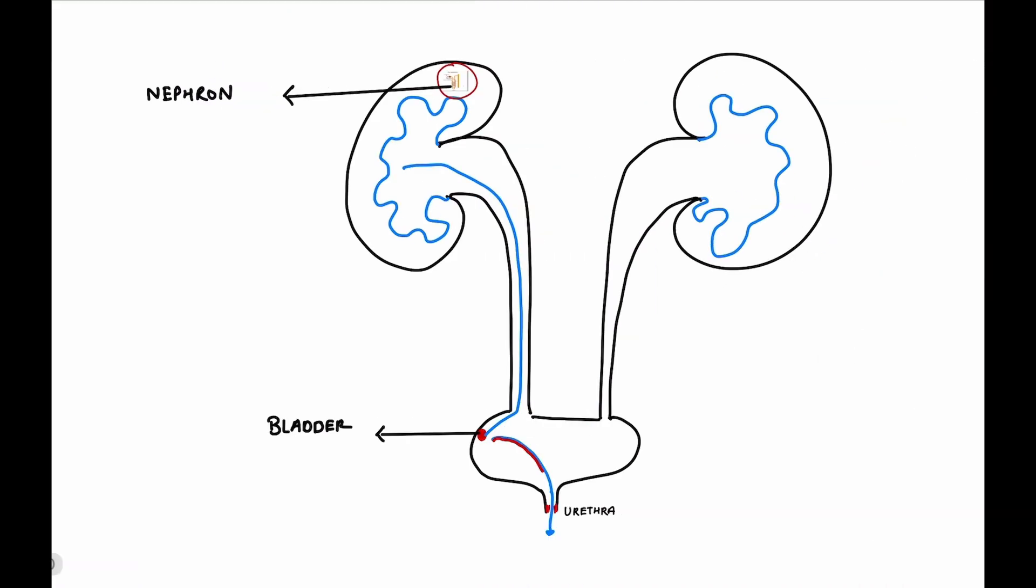Now let's look at bleeding from the bladder. Here, the urine from the kidneys remains clear till it reaches the bladder. Blood accumulates only in the bladder. So when the patient urinates, the initial urine will be clear and the later part towards the end will have blood or clots. So bleeding at the end of urination points to bleeding from the bladder.